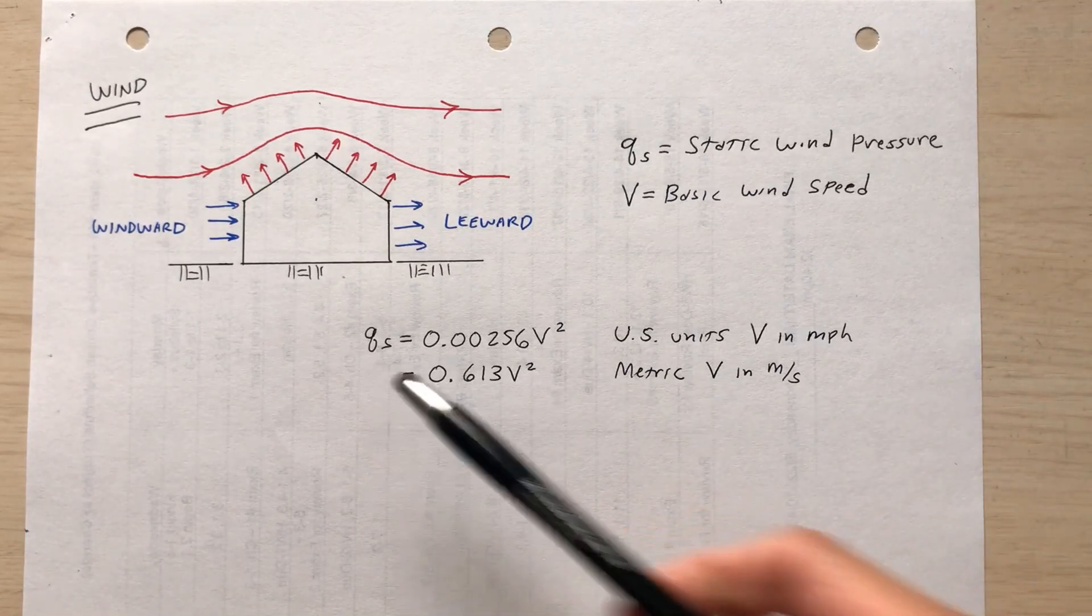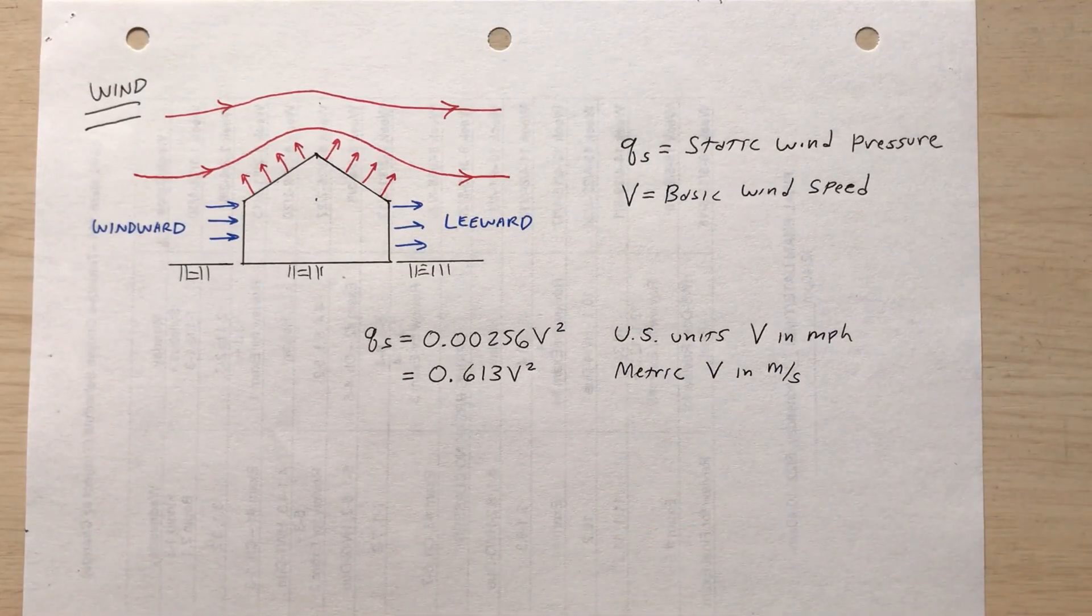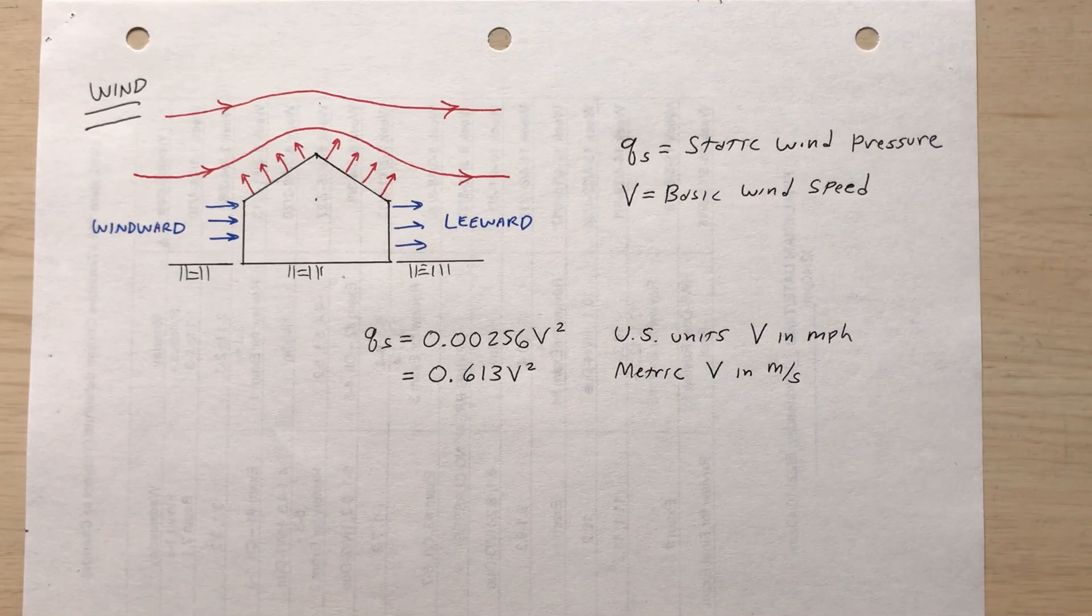So Q sub s, static wind pressure, is 0.00256 V squared for US units, where V would be in miles per hour.